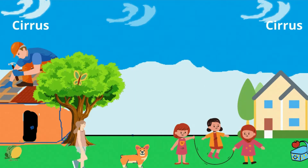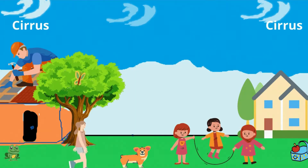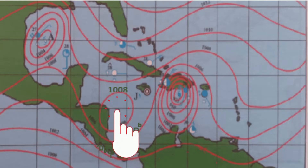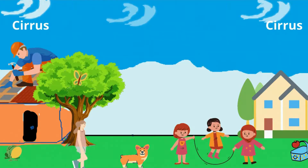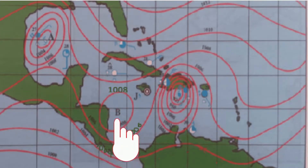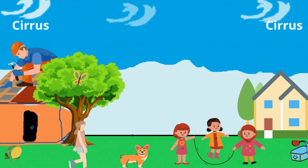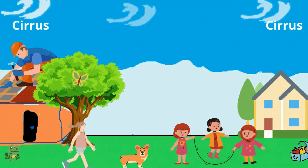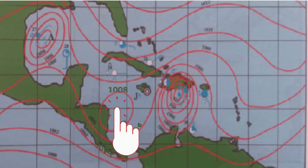As humidity increases, the air feels hot and sticky. There is often an appearance of feathery cirrus clouds at high levels. Without being warned of a hurricane, the average person would not even notice that it is close by.